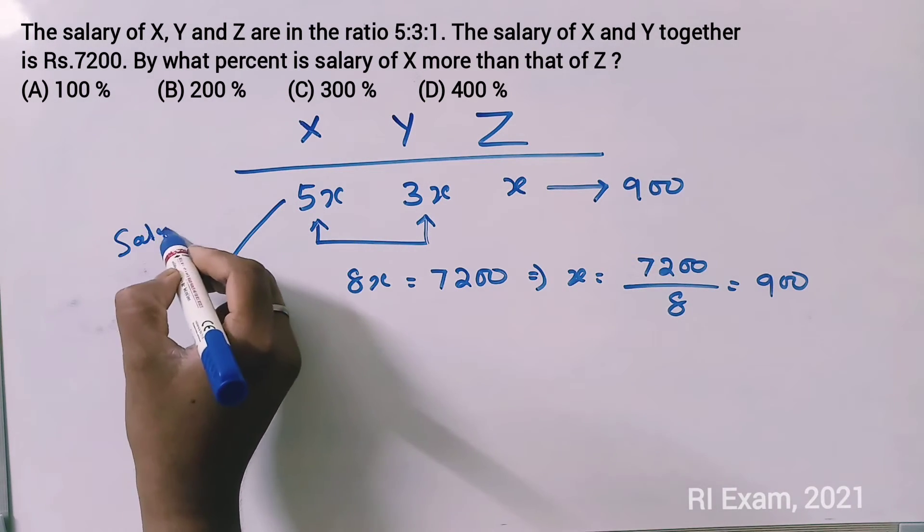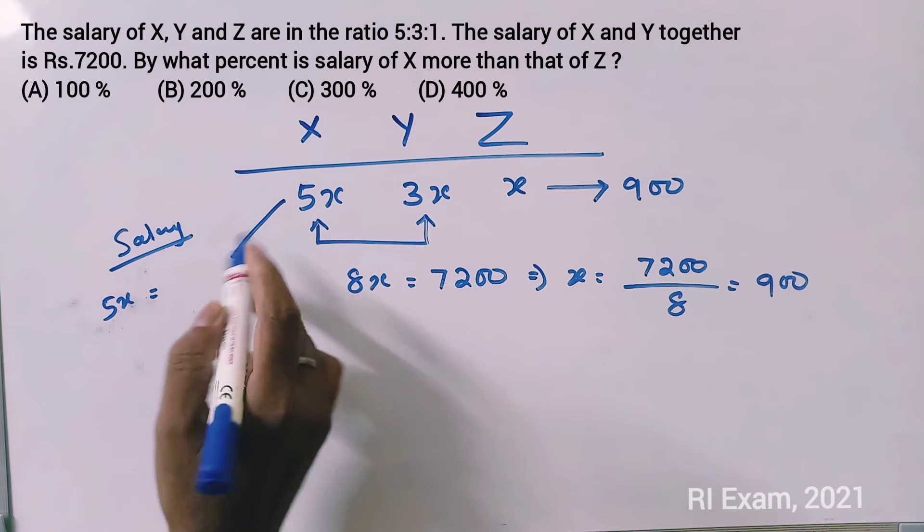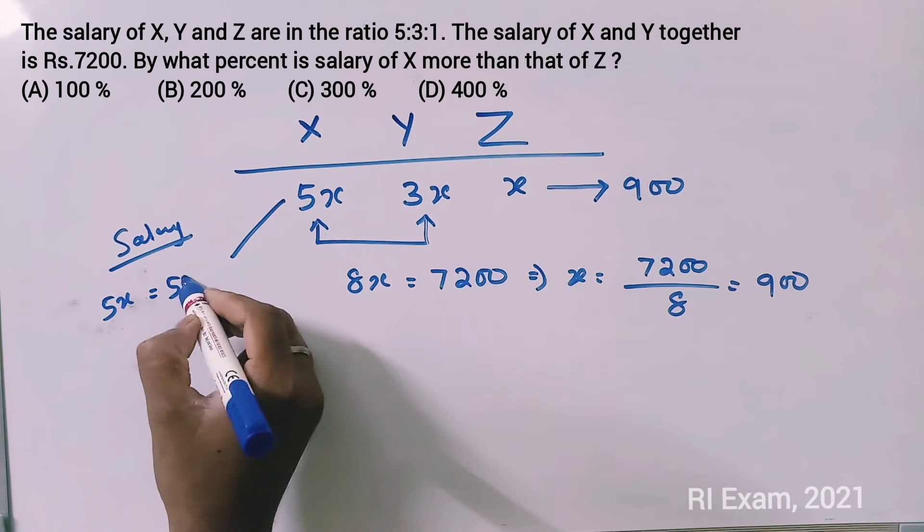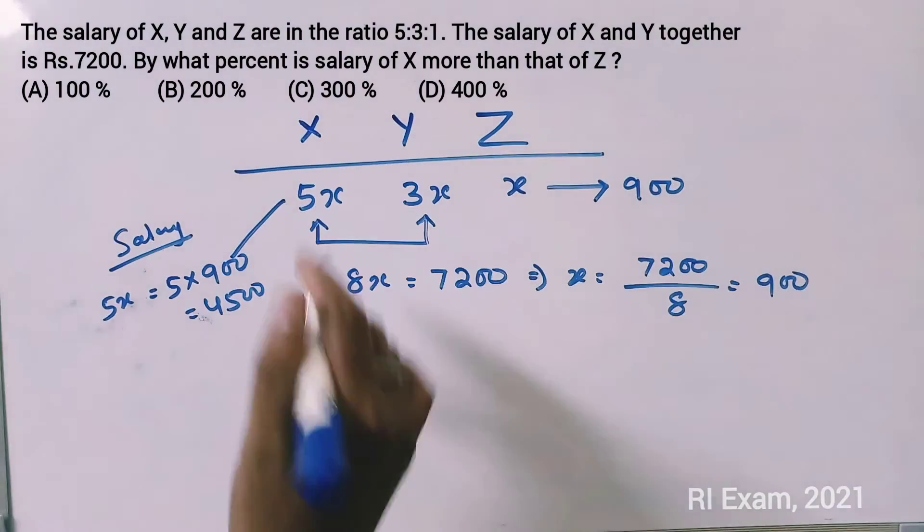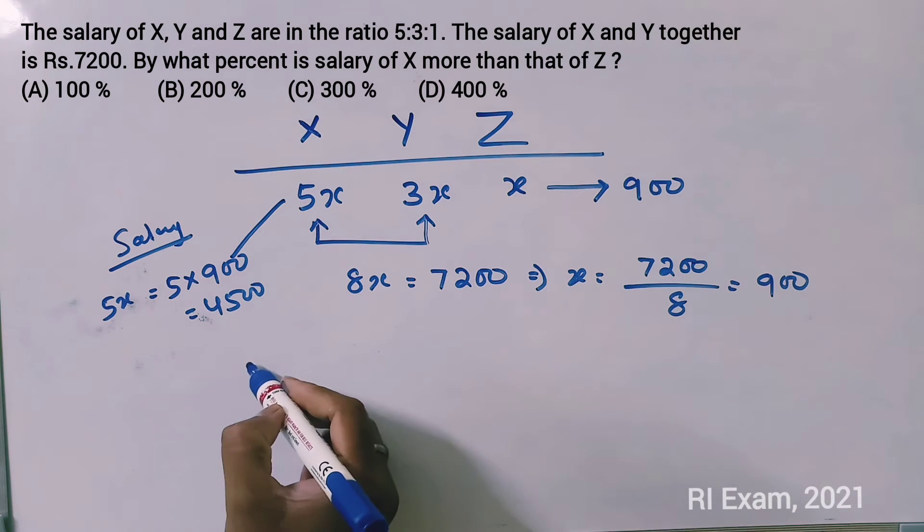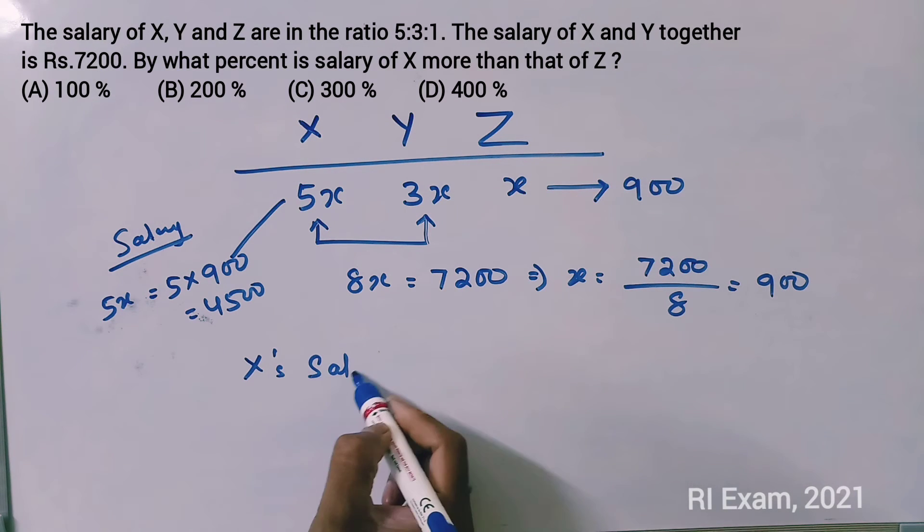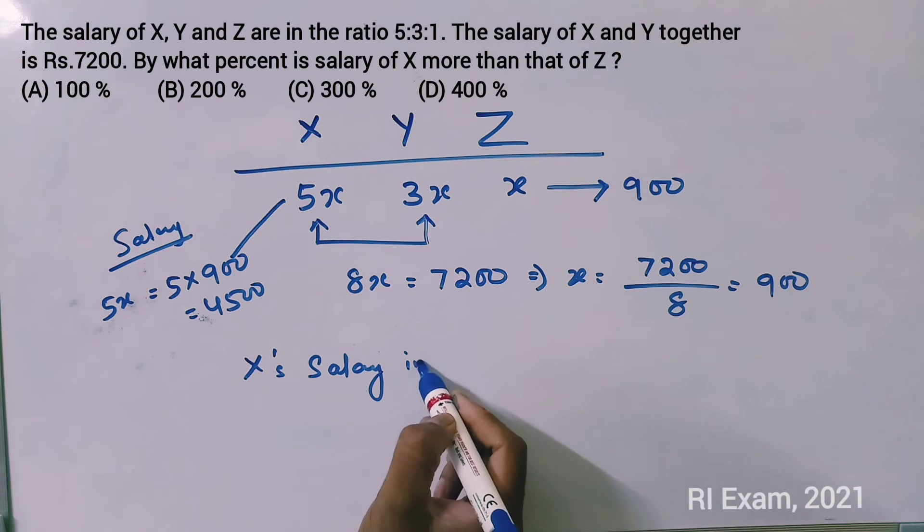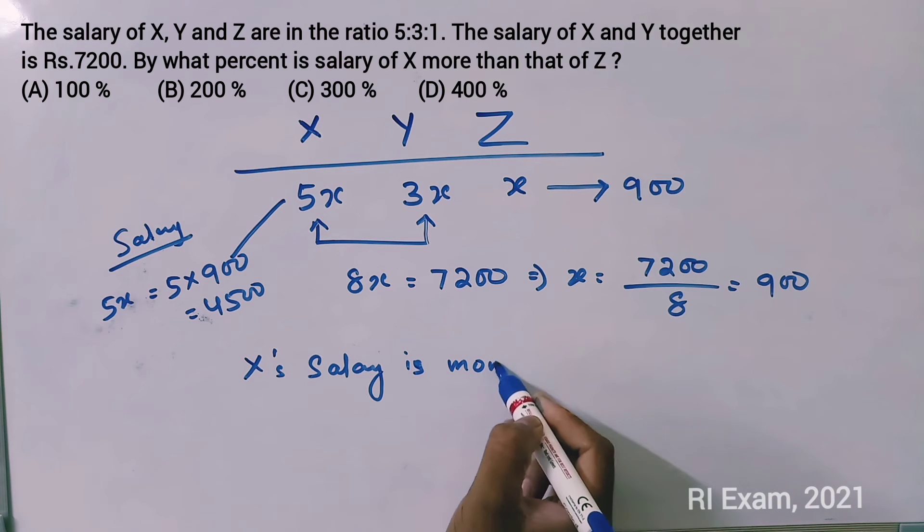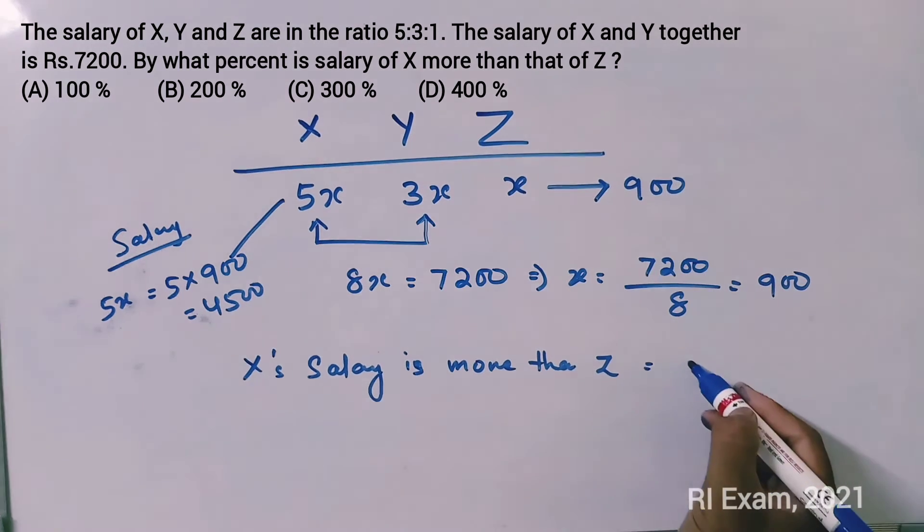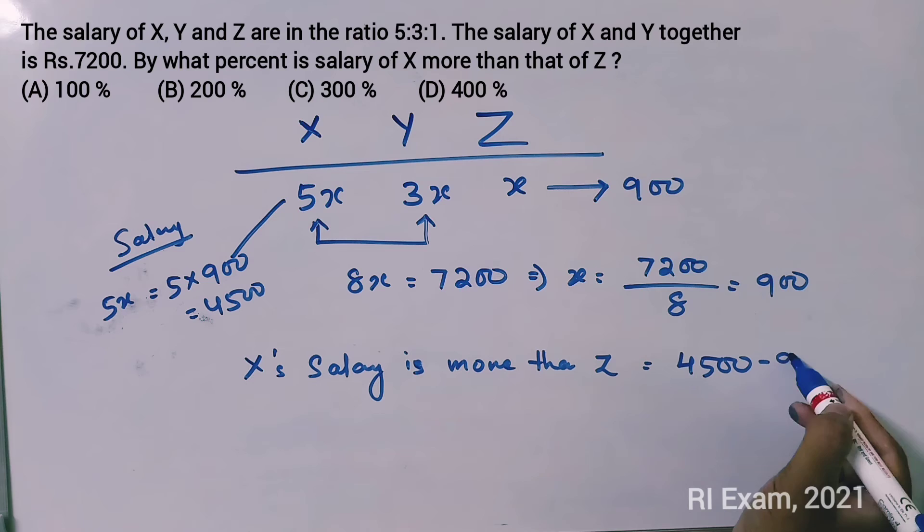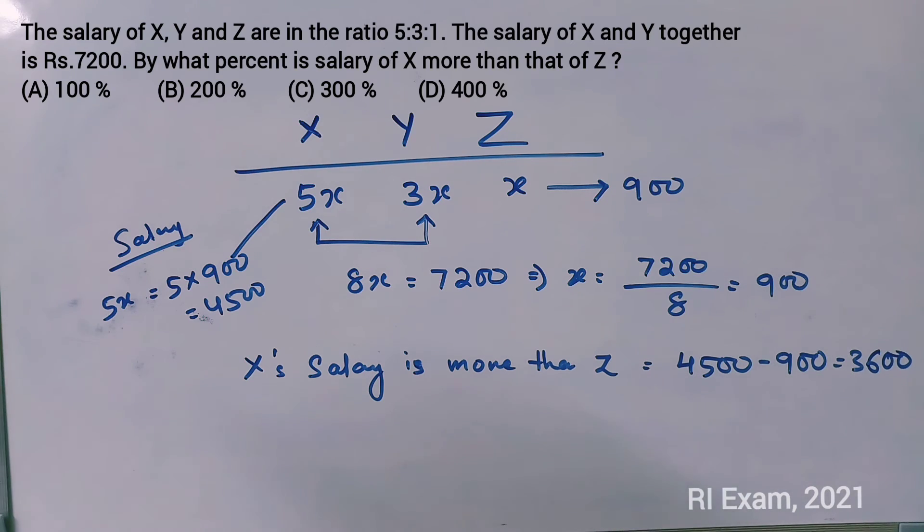5x, 5x is equal to 5 times 900 is equal to 4500. Then X salary is more than Z is equal to 4500 minus 900 is equal to 3600.